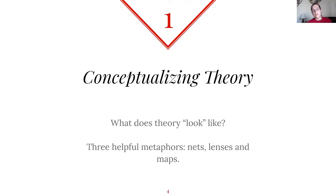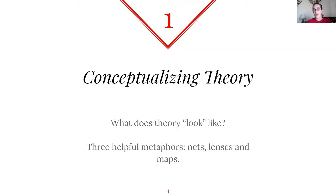So how can we conceptualize theory? For some people it's enough to say it's a way of looking at the world, but a lot of us really need a mental picture of what it might look like. There are three metaphors typically used in the communication discipline: nets, lenses, and maps. All have their strengths and weaknesses, so you just have to pick the one that works best for you.